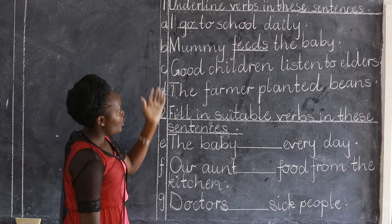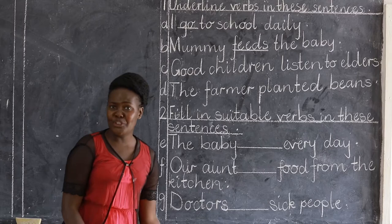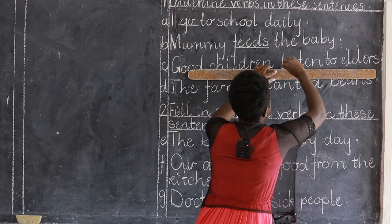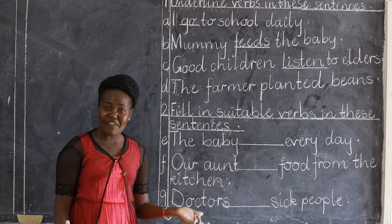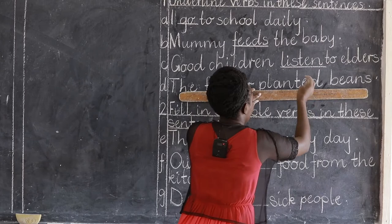Third: Good children listen to elders. Good children — what do you do? You listen. So 'listen' is the action. We underline it neatly. Next: The farmer planted beans. What did the farmer do? Planted. So 'planted' is the action. You underline it. You must have enjoyed this underlining.